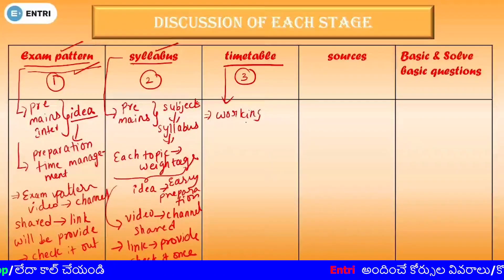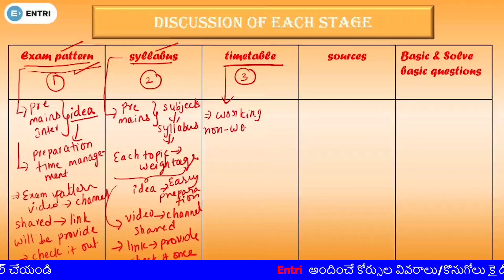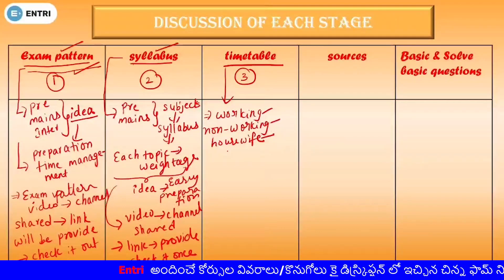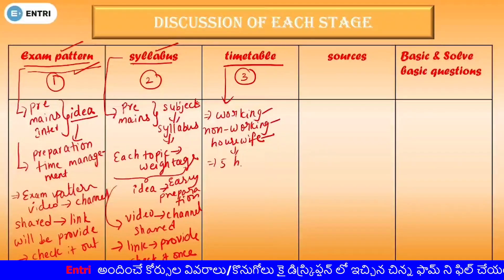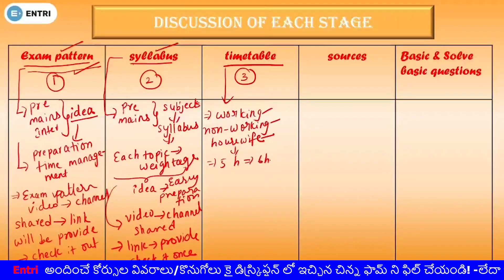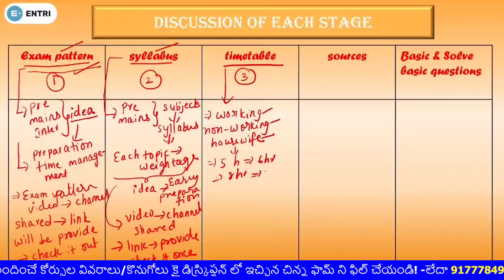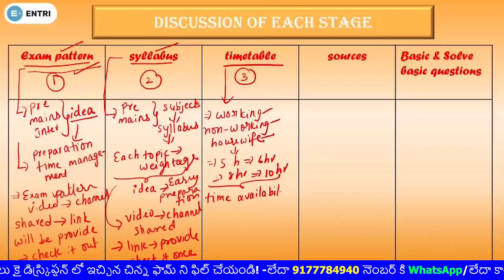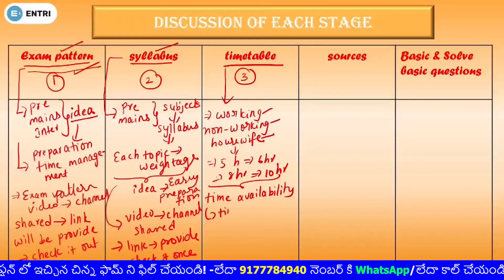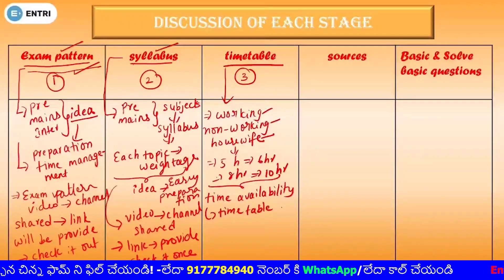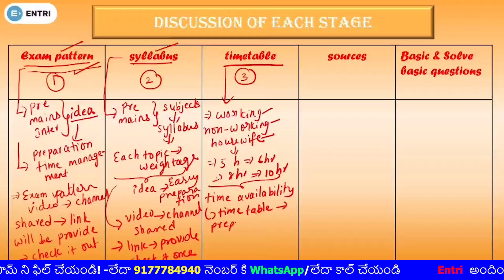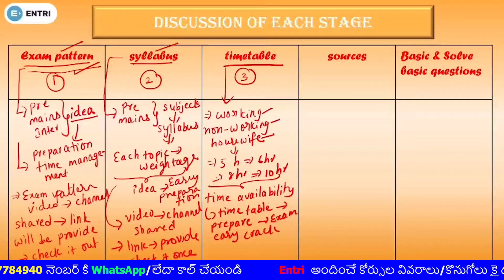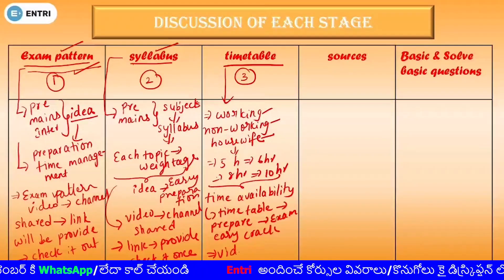You have working people, non-working people, housewives — each with different daily life schedules. You have available time like 5 hours, 6 hours, 8 hours, or 10 hours. So you can create a time table. If you prepare a time table, you can crack the exam very easily.